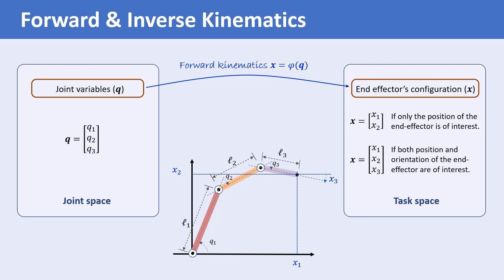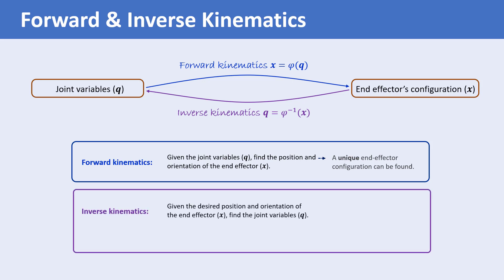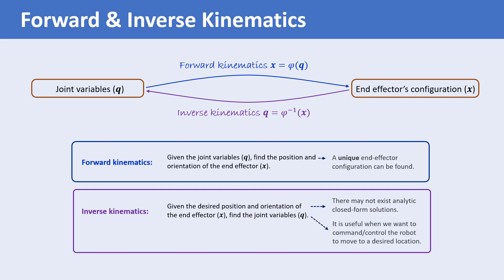The problem of finding the joint variables from the position and orientation of the end effector is called inverse kinematics. Forward kinematics provides a unique end effector configuration for any given vector of joint variables, but the inverse kinematics problem is not as simple. There might be multiple solutions and it is usually hard to find analytic closed-form solutions, as the kinematic equations are non-linear. Inverse kinematics is useful when we want to command or control a robot to move to a desired location — we know the end effector location and want to find the corresponding joint coordinates.